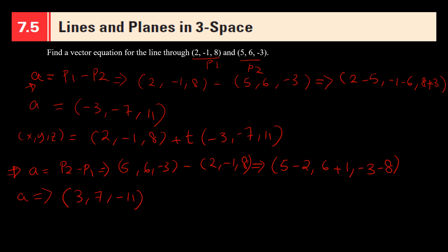So now I can write the vector equation as (x, y, z) equals... Now here, since I did point 2 minus point 1, so my point 2 goes here. So I'm going to write point 2 here. So point 2 is (5, 6, -3) plus t times A.